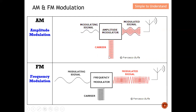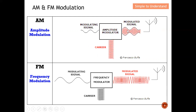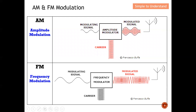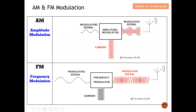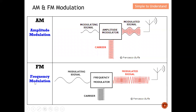The modulated signal combines the modulating signal and the carrier. For amplitude modulation, the change happens at the amplitude of the modulated signal. You can see that the modulating signal appears at the envelope of the modulated signal. This is what we mean by amplitude modulation.